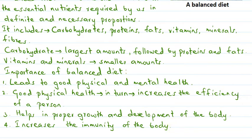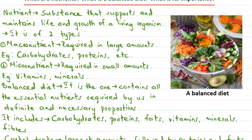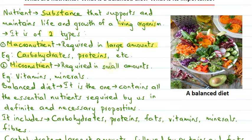Let's quickly revise what we have studied. Nutrients are those substances that support and maintain life and growth of a living organism. Nutrients are of two types: macronutrients and micronutrients. Macronutrients are required in larger amounts by our bodies — for example, carbohydrates and proteins. Micronutrients are required in smaller amounts — for example, vitamins and minerals. A balanced diet is the one that contains all the essential nutrients required by our body in definite and necessary proportions.